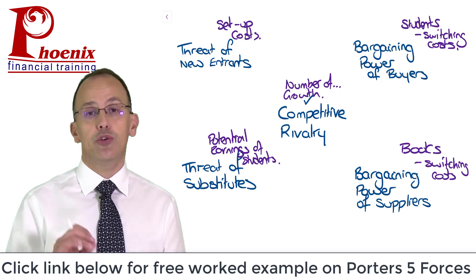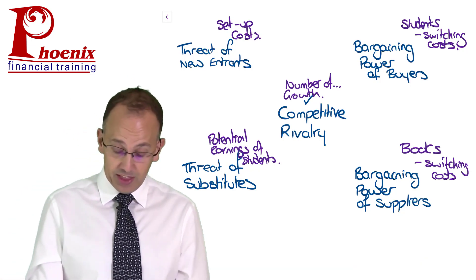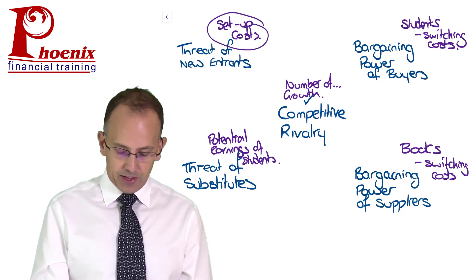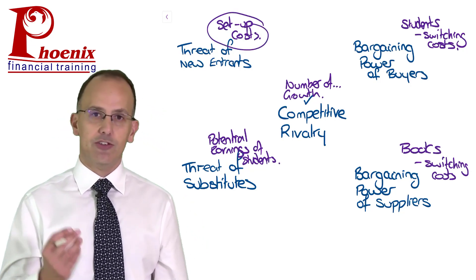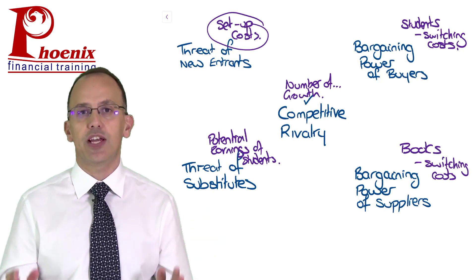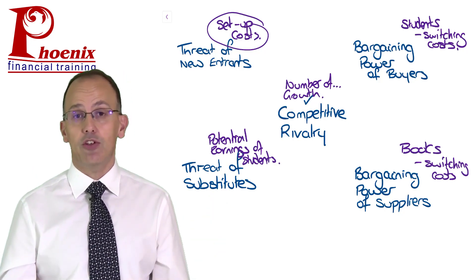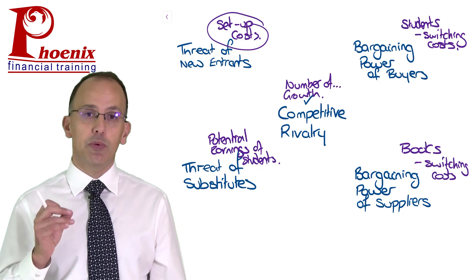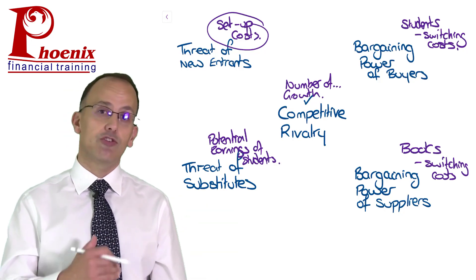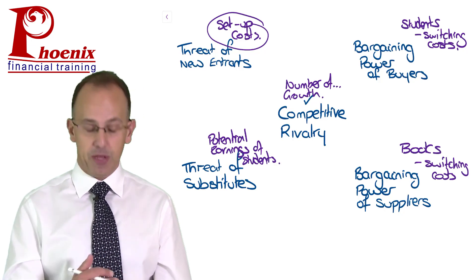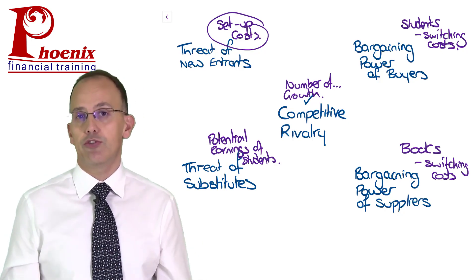Think about whether you should stay in the industry you're in, whether you should go into a new industry or not, and think of the whole thing on balance with all five factors. But don't just do it once — this has to be an ongoing process because things change. For example, with regards to setup costs, if you want to set up a traditional large college it's going to cost you a lot of money. But over time, with the onset of technology, it's becoming much, much easier to set up things like online courses, and as such it's going to become cheaper and cheaper for people, so you start getting more and more new entrants coming in.